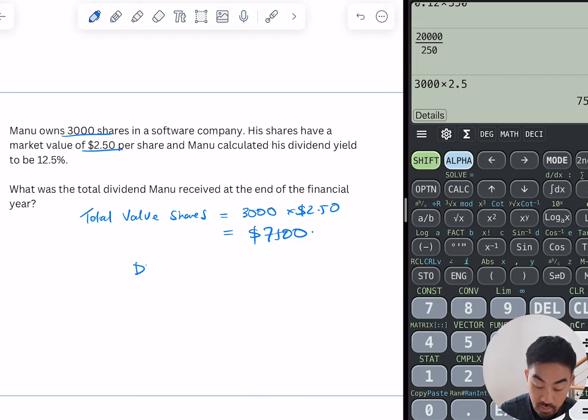Now he gets 12.5% of that as a dividend. So his dividend, let me rewrite them properly, so his dividend is just gonna be 12.5% of 7,500. Easy. So times 0.125, so his total dividend will be $937.50.